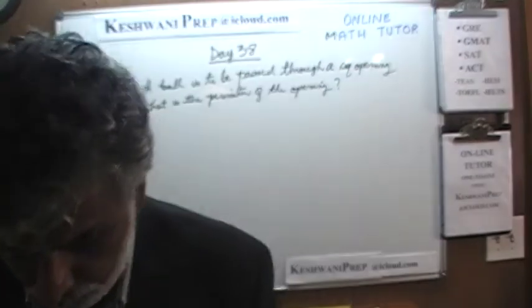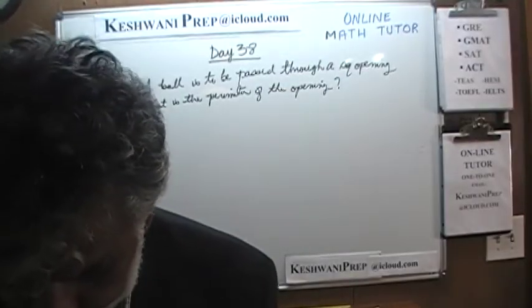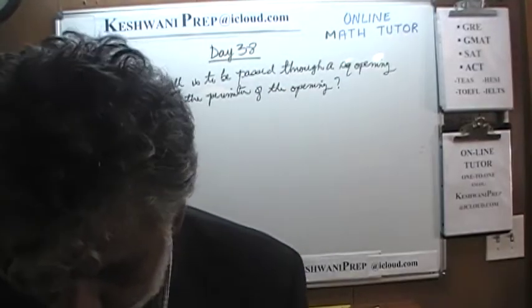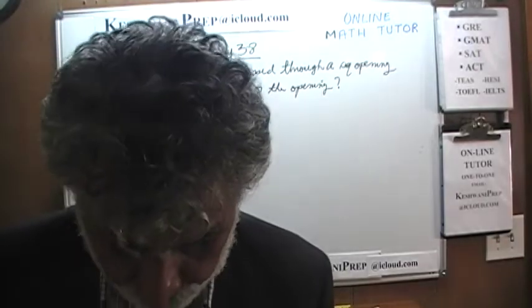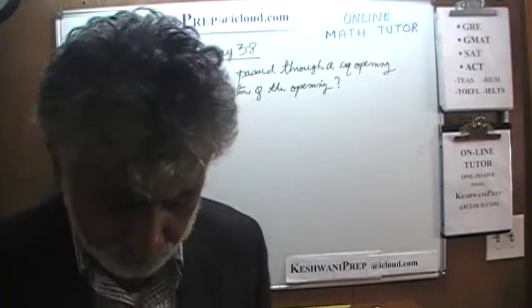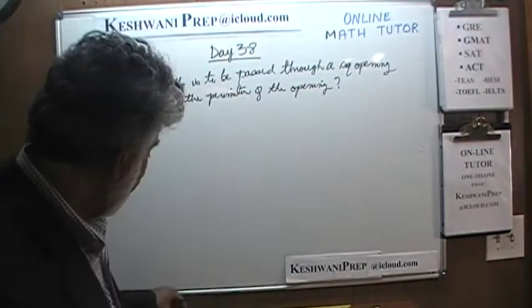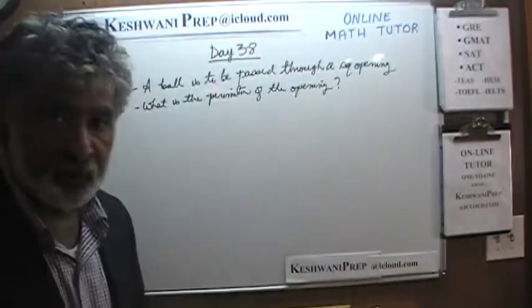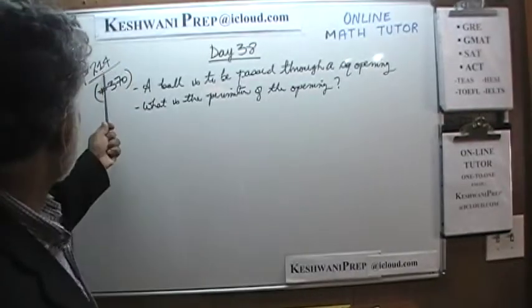Today we will solve some data sufficiency problems that you will find on page number 214. Please turn to it — make sure the book is in front of you so you can follow the work. Page 214, number 1, the very first problem, 370.